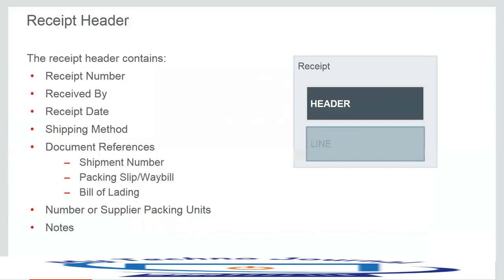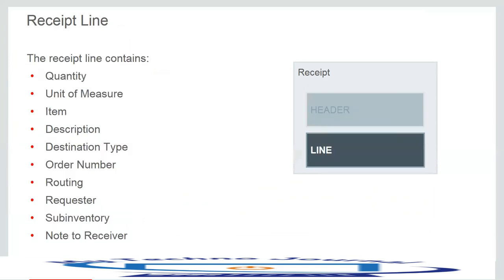The fields available on the receipt header are shown on this slide, which we will also see during the demonstration. Similarly for the receipt line, some of the important attributes include quantity, unit of measure, item description, destination type, and order number.